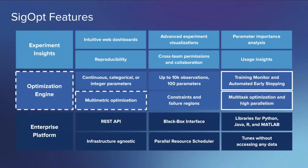During the first talk, we talked about the optimization engine itself and layered in multi-metric optimization. Today, as I said, we'll be talking about how to think about training deep learning models and how to make it faster and more efficient.